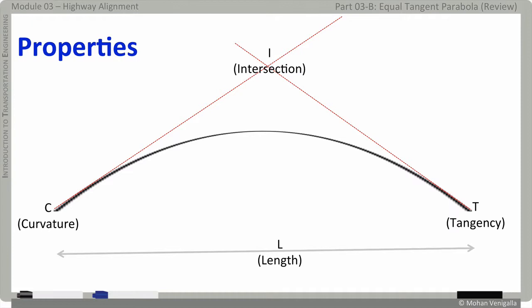This is the length of the curve. The equal tangent property of the curve states that the point I is exactly midway between point C and T, and hence C to I will be L/2. And that is what equal tangent parabola is. And the equation of the curve is Y equals AX squared plus BX plus C.